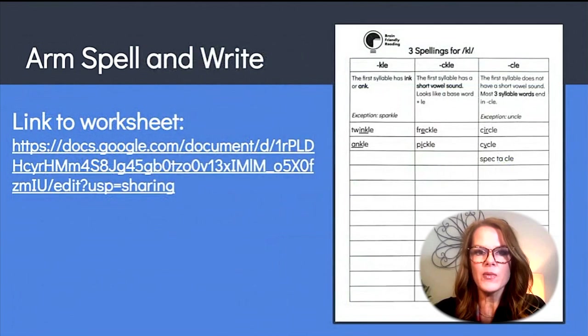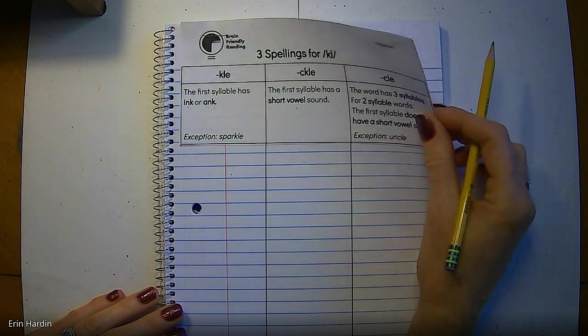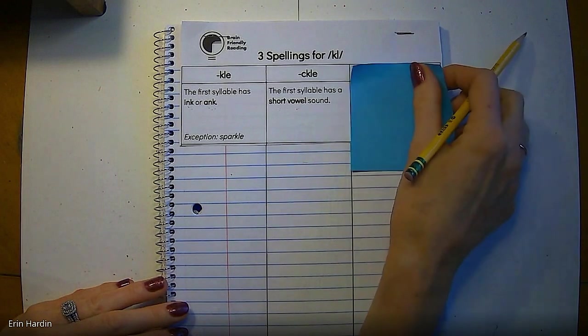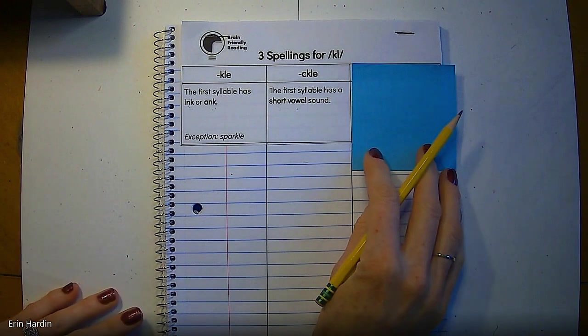For practice with arm spelling and writing words with the three different spellings, you could use this three-column worksheet. The sheet includes the rule for each spelling under each heading and some examples. As you arm spell words to write, listen to the vowel sound or the number of syllables to decide which spelling of CUL to use. Let me demonstrate how you can use this practice sheet to spell some words. So I cut off the top of the worksheet and stapled it onto a page in a notebook. To start, it may be helpful to scaffold the work and start with two spellings at a time and then add on the third when your students have developed accuracy and fluency with the two.